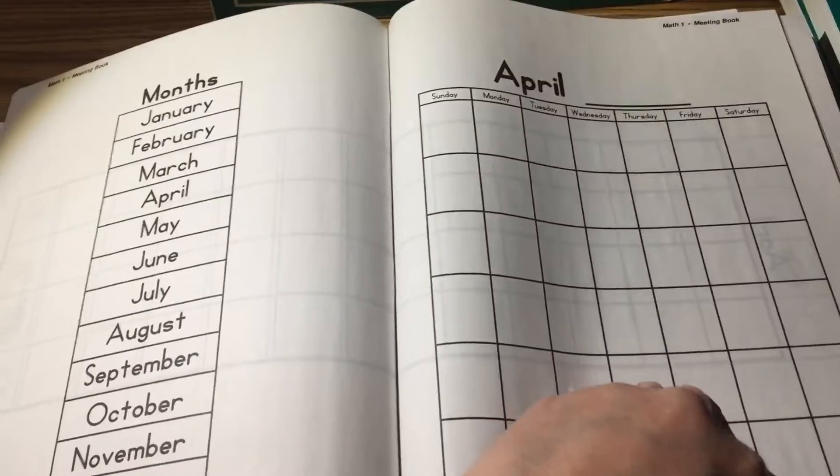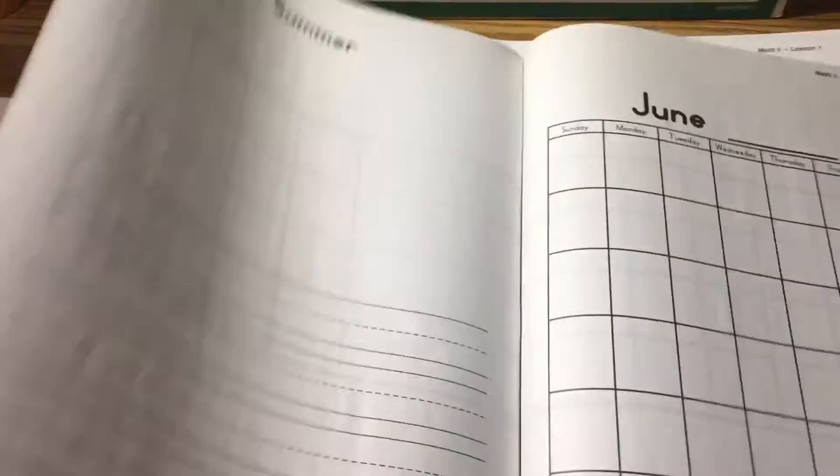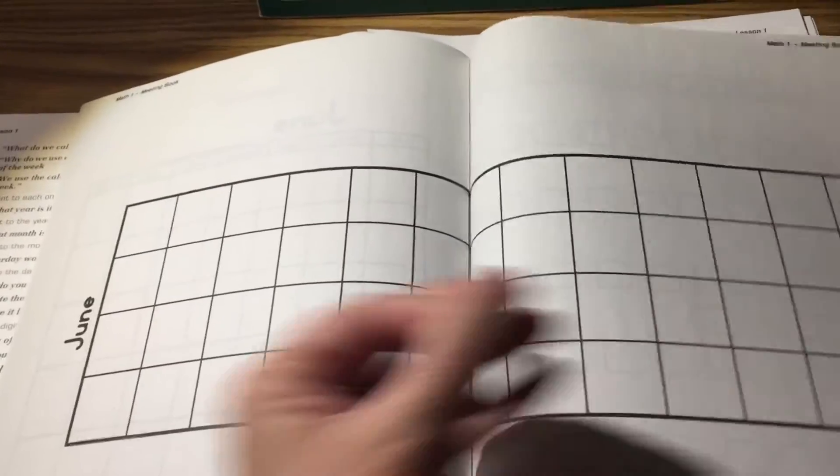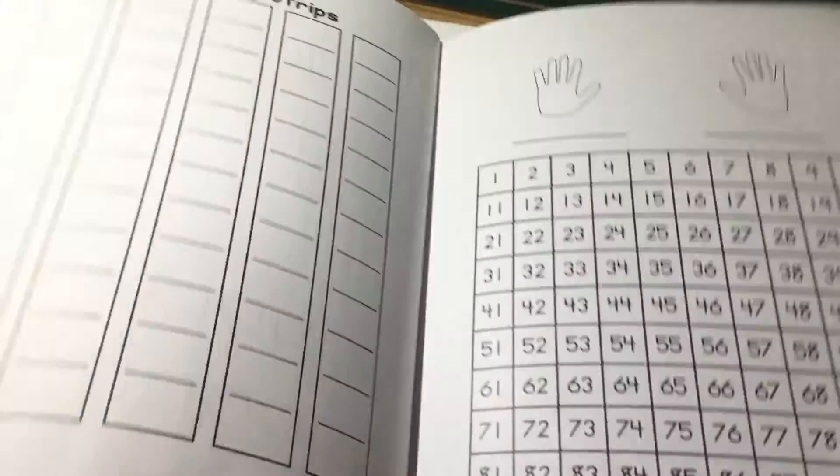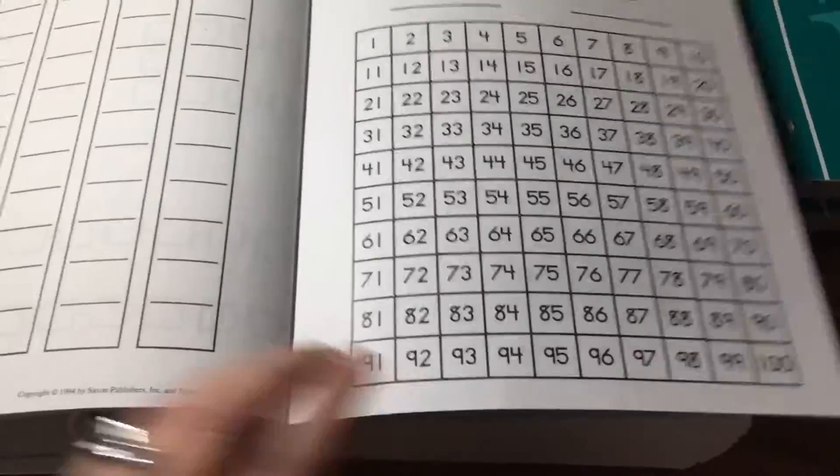Until you get to June. And you finish up that weather chart. Then you have this number chart. The student will fill in all the numbers. And then with that it just has some counting strips and a 1 to 100 chart. So that's it for the meeting book.